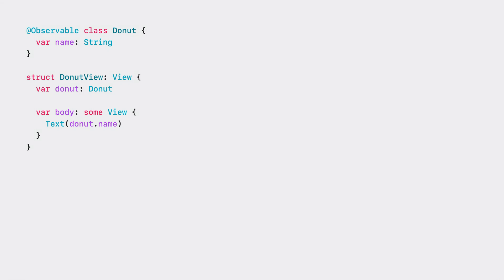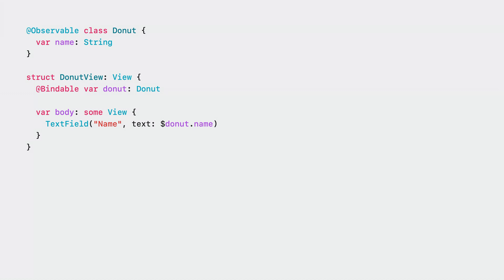But in reality, we want to be able to edit that name. So instead of a Text, we can use a TextField. That TextField takes a binding — it reads from the binding to populate the value, but also writes back to the binding when the user changes the value.